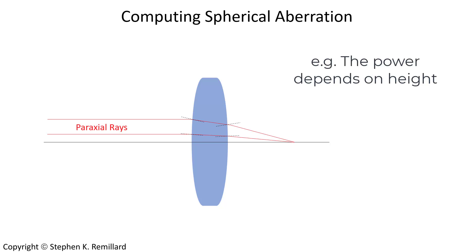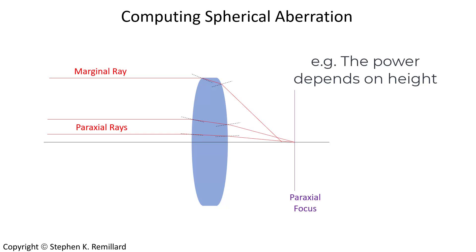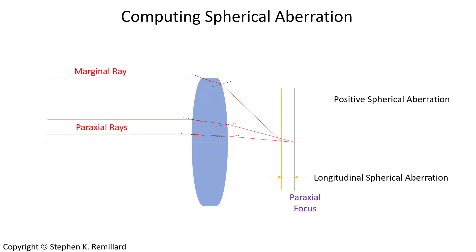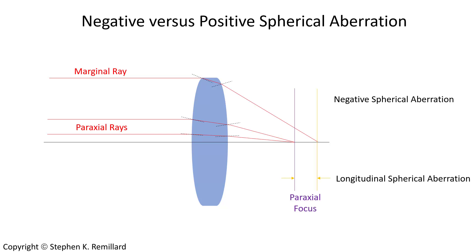A ray that comes in lower will refract at each surface and ultimately strike the optic axis at the same point — these incoming paraxial rays are focused. They're close enough to the optic axis that they both meet at the paraxial focus, as opposed to the marginal ray, which is at the outer edge and will arrive at the optic axis at a different point — either before or farther from the paraxial focus. The distance between the marginal ray focal point and the paraxial focal point is the longitudinal spherical aberration, and it could be in front of or behind the paraxial focus.